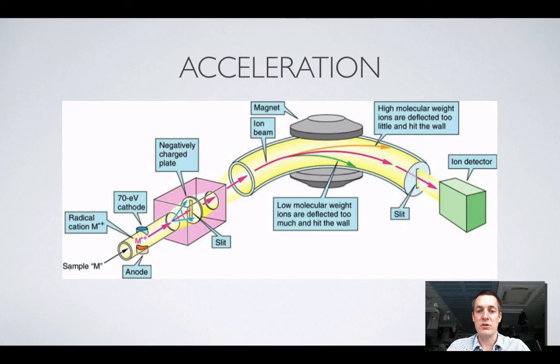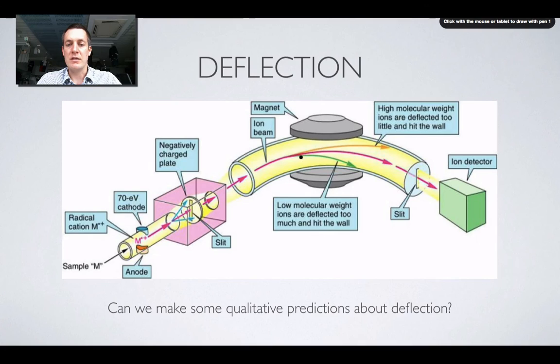Now that they're traveling really fast through this tube, some of them will make it round the bend, and some won't. Now, clearly, they've got no inclination of their own accord to just go round this bend. They'd rather just carry on in a straight line, unless some force acts on them, obviously. So, we put this magnetic field in their way, and that will bend them round the tube.